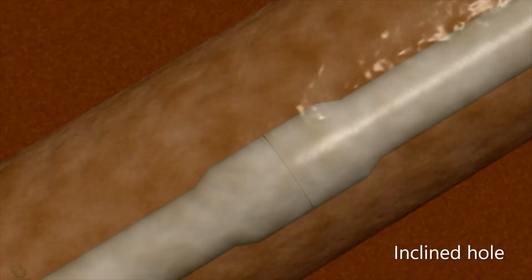In an inclined hole section where the inclination is between 30 and 60 degrees, flow and rotation create enough turbulence that assists in moving the cuttings upward.